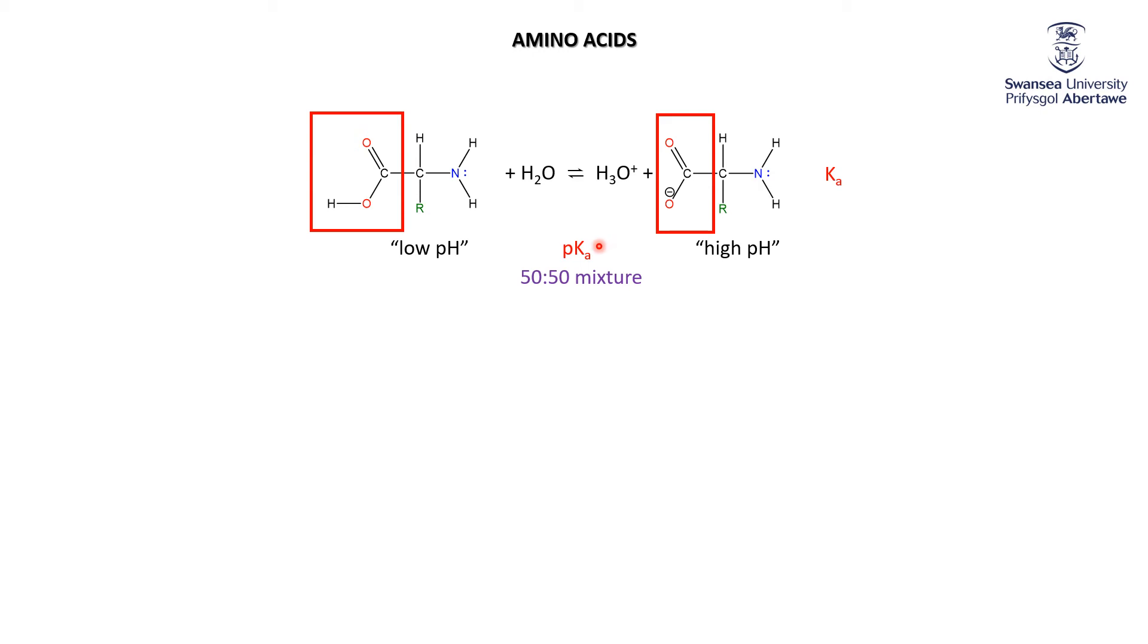But this is very important when applied to amino acids, which we'll discuss over the next couple of videos. For each amino acid, the acid end has its Ka. When pH is below the pKa, it's mostly in the acid form. When pH is higher than the pKa, it's mostly in the conjugate base form.